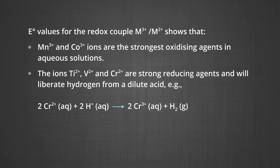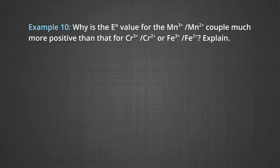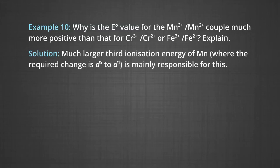The equation shows that when Cr2+ reacts with acid, chromium changes to Cr3+ and hydrogen gas is evolved. Why is the E° value for the Mn3+/Mn2+ couple much more positive than that for Cr3+/Cr2+ or Fe3+/Fe2+? The answer is the much larger third ionization energy of manganese, where the required change is D5 to D4, is mainly responsible. This also explains why the +3 state of manganese is of little importance.